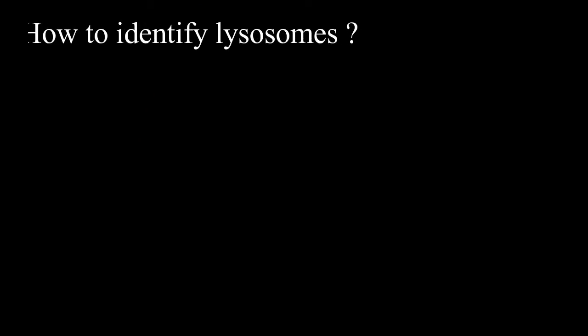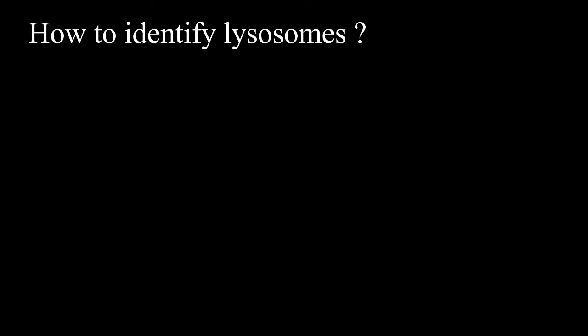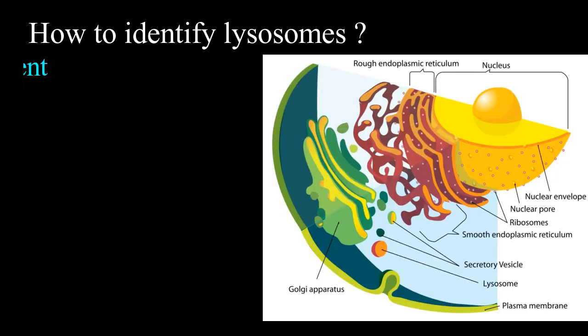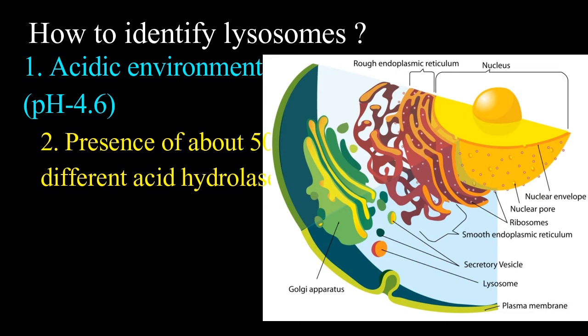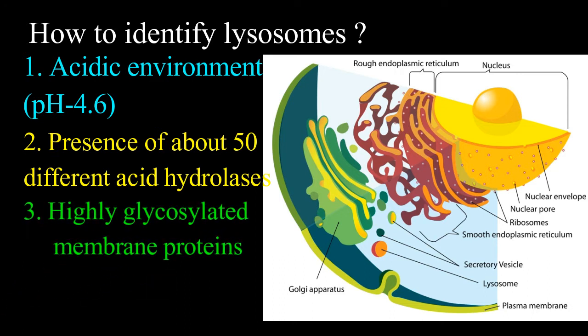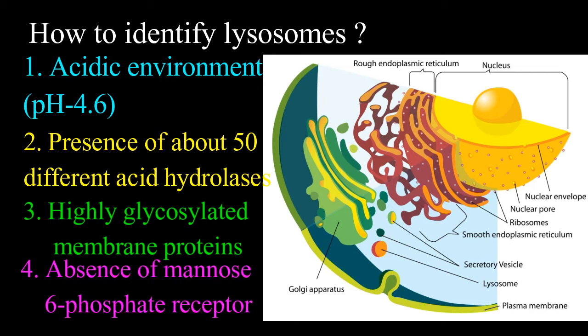Lysosomes can be identified by using four criteria. First, acidic environment in which the pH is in the range of 4.6. Presence of about 50 different hydrolases that are active at acidic environment. Highly glycosylated membrane proteins that protect the lysosomal membrane from acid hydrolysis. And the last one, absence of mannose-6-phosphate receptors.